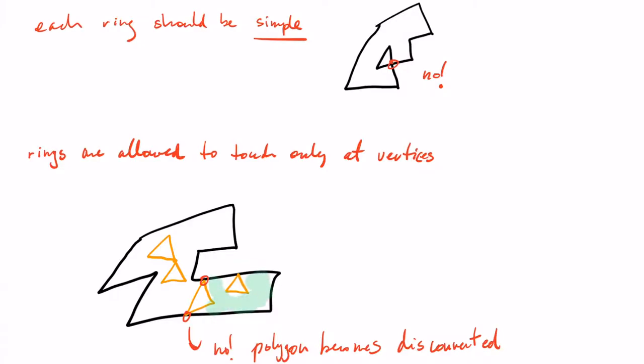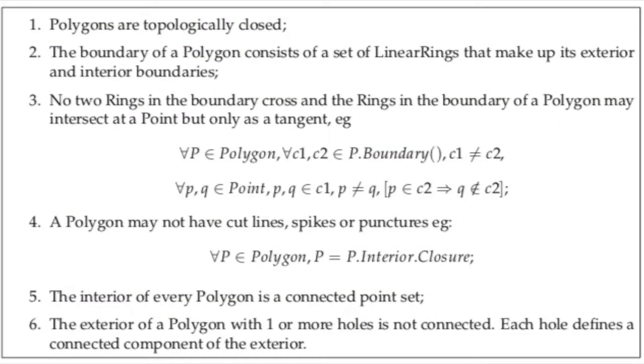One polygon, according to the international standard, should be one continuous area. The details are given in this set of six assertions that are available in the OGC Simple Feature specification. Then you can read these assertions in the handout.